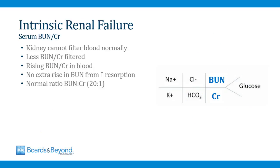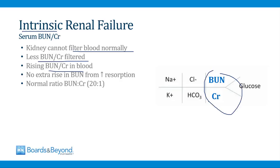Now let's talk about intrinsic renal failure. In this form, the problem lies within the kidney itself — there's some problem with the nephrons and tubules, and the kidneys are unable to filter blood normally. As a result, less BUN and creatinine will be filtered and both will rise. In contrast to pre-renal failure, in intrinsic renal failure there's no extra rise in the BUN from increased resorption, and as a result there will be a normal ratio of BUN to creatinine of 20 to 1 — the ratio will not increase the way it does in pre-renal failure.